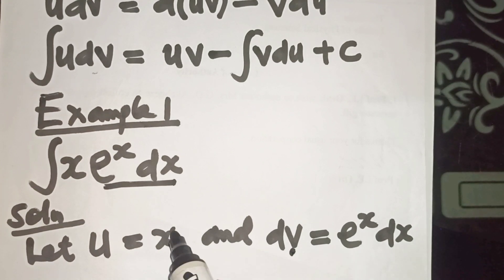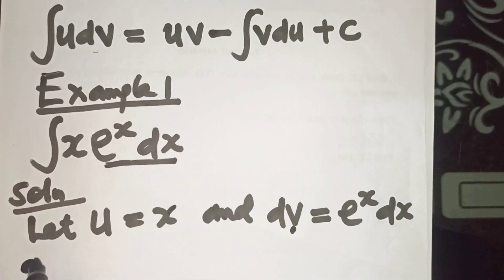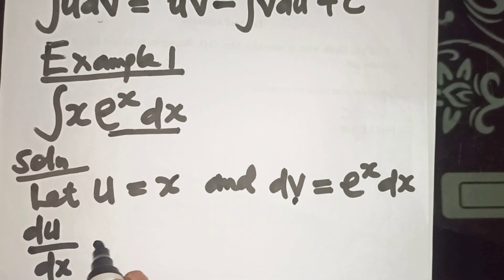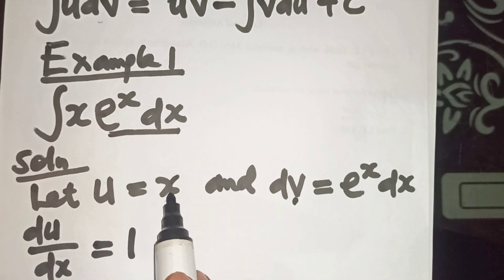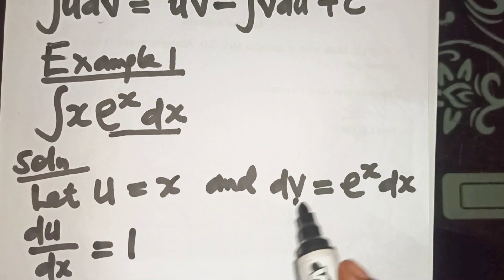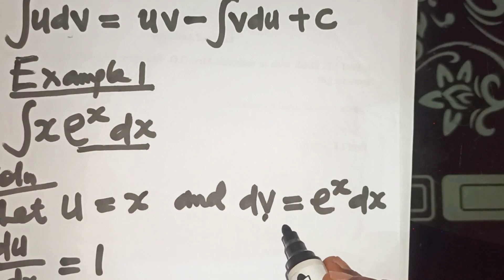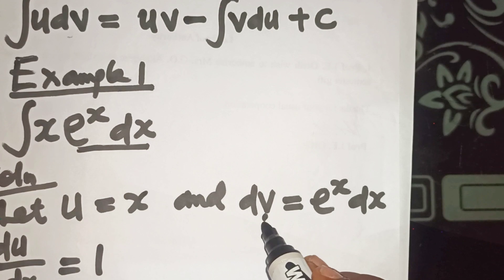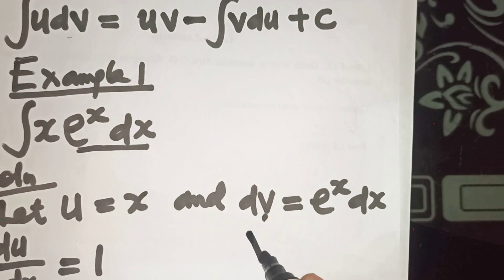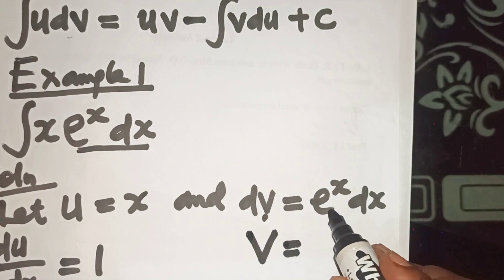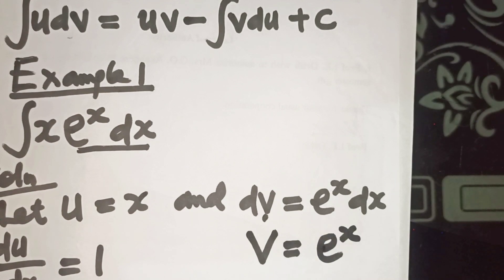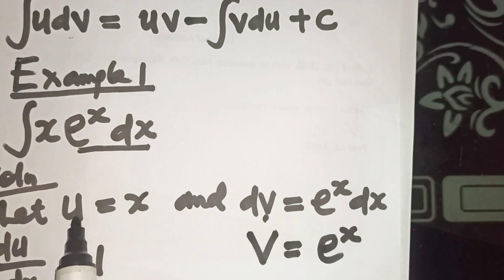The next thing we are going to do is differentiate u with respect to x. We will have du/dx is equal to 1 — the derivative of x with respect to x is equal to 1. This implies that du is equal to dx. And here, we will integrate dv. If we integrate dv, we will have v is equal to eˣ. So, we now have values for u and for v.